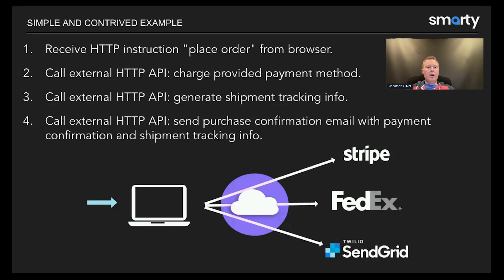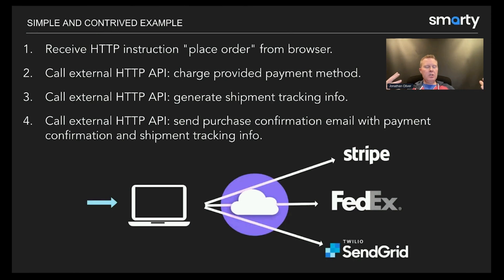The monolithic application would then perform the following steps: number one, call an external HTTP process to charge the payment method; then call FedEx or whoever and generate the shipping label; and finally, once both steps were completed, send the purchase confirmation email — payment info, shipping label, and all that — via email to the end user.